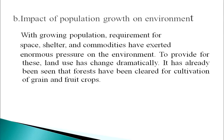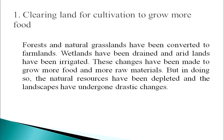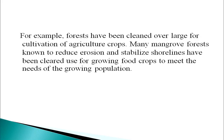With growing population, requirement for space, shelter and commodities have exerted enormous pressure on the environment. Land use has changed dramatically. Forests have been cleared for cultivation of grain and fruit crops. Forests and natural grasslands have been converted to farmlands, wetlands have been drained and arid lands have been irrigated. These changes have been made to grow more food and raw materials, but in doing so the natural resources have been depleted and the landscapes have undergone drastic changes. Many mangrove forests known to reduce erosion and stabilize shorelines have been cleared to grow food crops to meet the needs of the growing population.